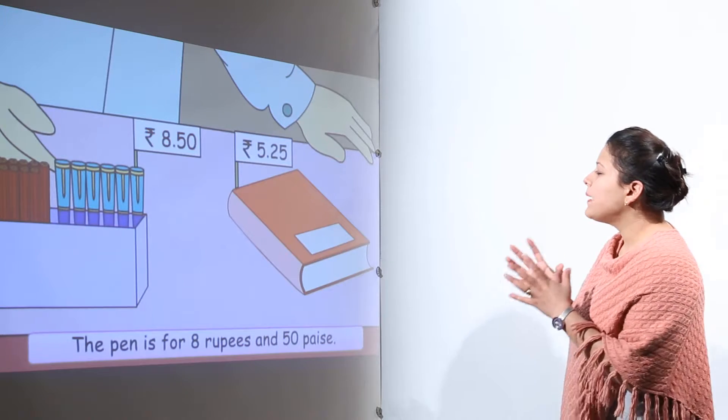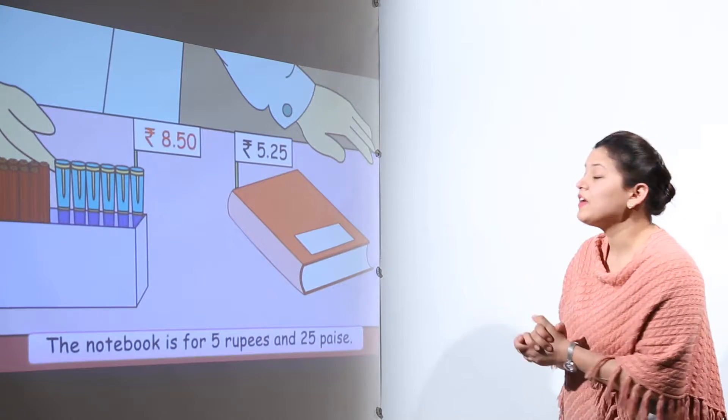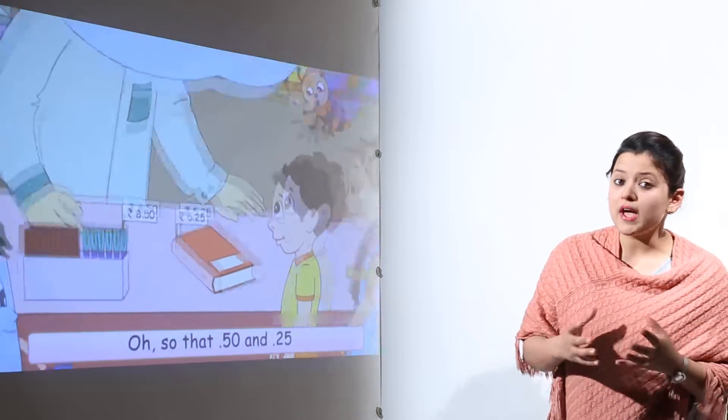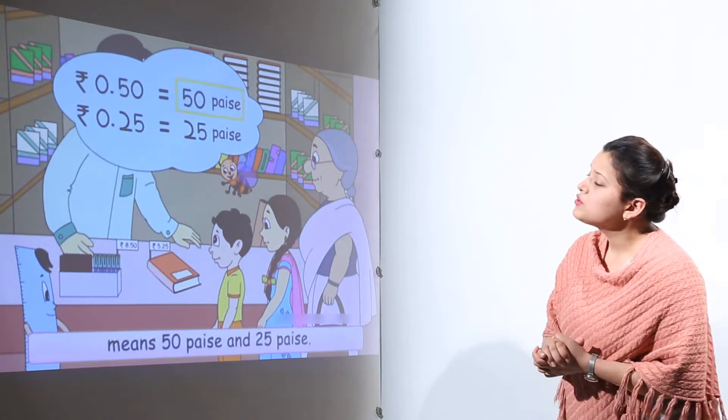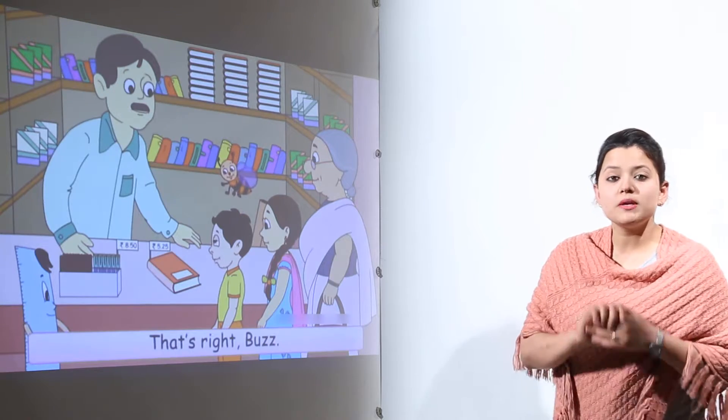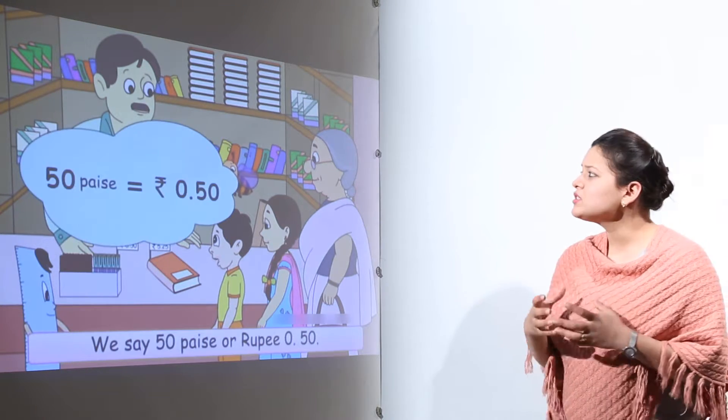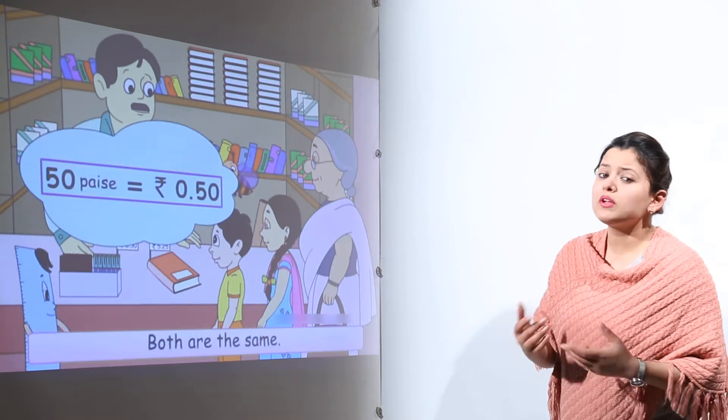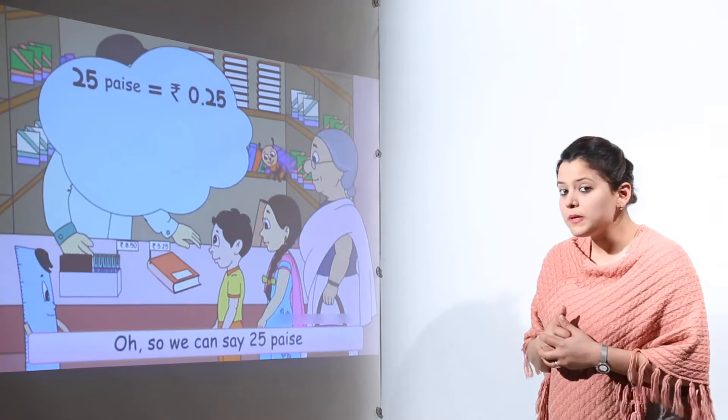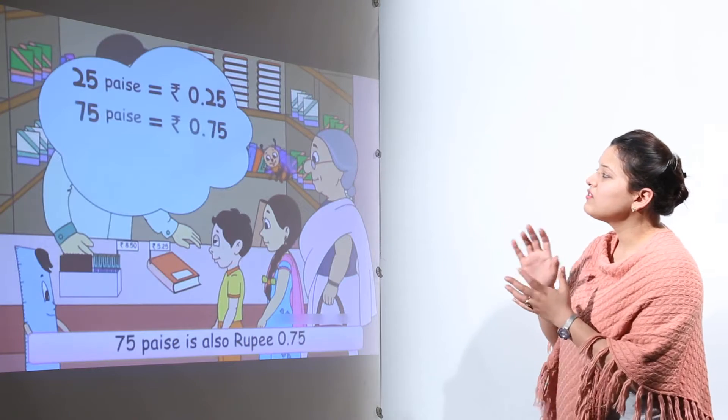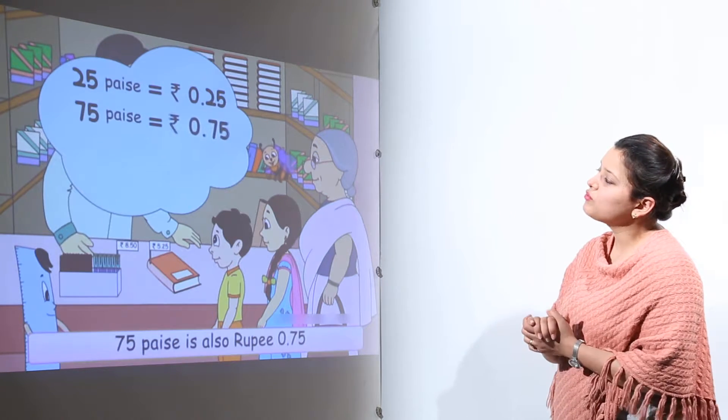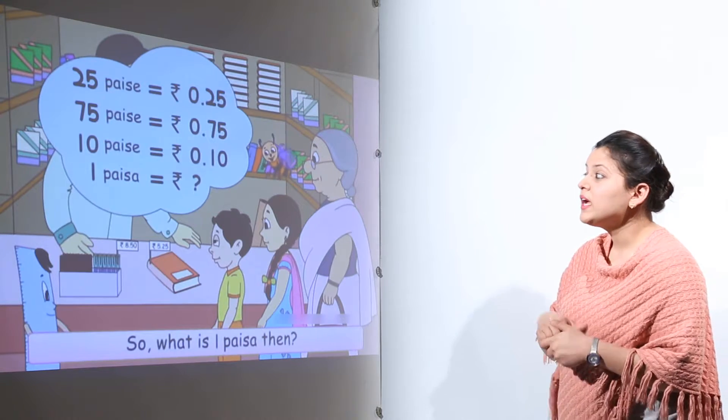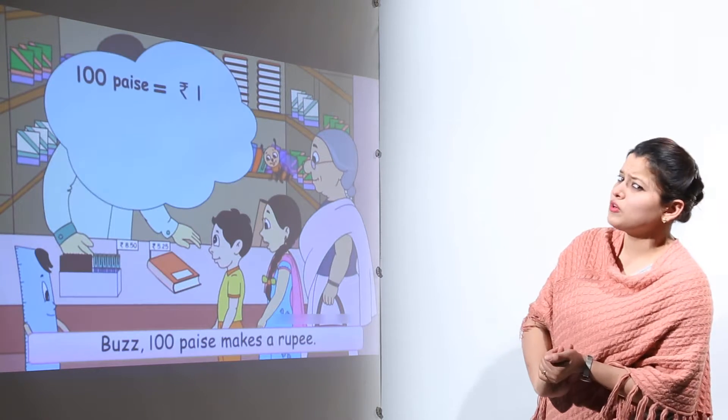Actually the pen is costing rupees 8 and 50 paisa. Whereas the notebook is costing rupees 5 and 25 paisa. So we come to the conclusion that 0.50 means 50 paisa. 50 paisa can be written down as 0.50 rupees. So 25 paisa can be written down as 0.25. 75 paisa can be written down as 0.75. 10 paisa can be written down as 0.10.